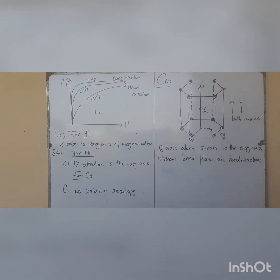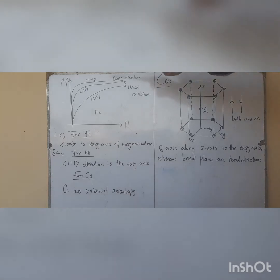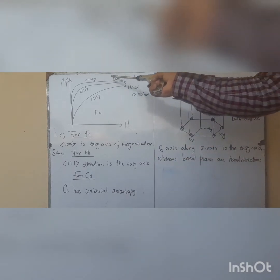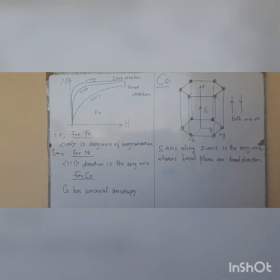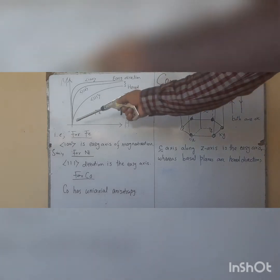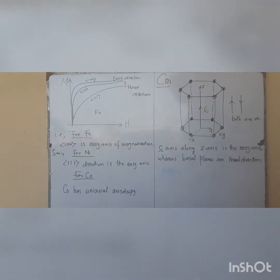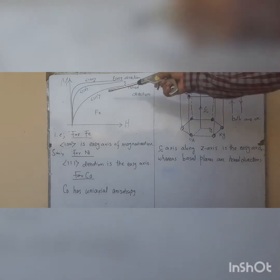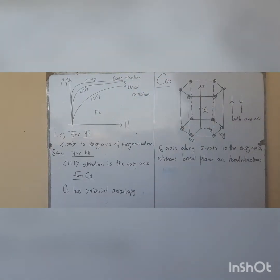Let's discuss more about magnetocrystalline anisotropy. For iron and nickel, which have cubic structure, the [1,0,0] direction is the easy axis of magnetization for iron — it is easiest to magnetize iron along [1,0,0], whereas [1,1,0] and [1,1,1] are the hard directions of magnetization.